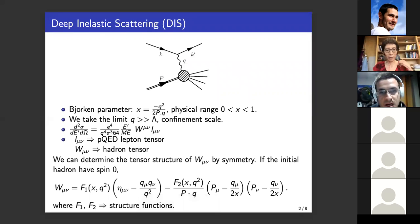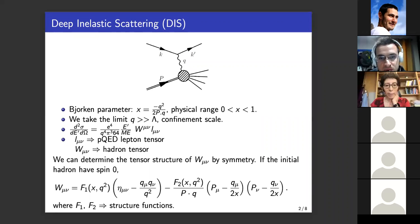Okay, first of all we have in this picture the process of the DIS. We have the initial lepton, say an electron, which exchanges a virtual photon with momentum q that probes the interior of the hadron which has momentum p. In this process, we define a Bjorken parameter x which is proportional to the q squared, where q is the momentum of the virtual photon. The Bjorken parameter is between zero and one in the physical range, where x equals one is elastic scattering. We take the limit q much larger than lambda, where lambda is the confinement scale, and we have also the differential cross section.